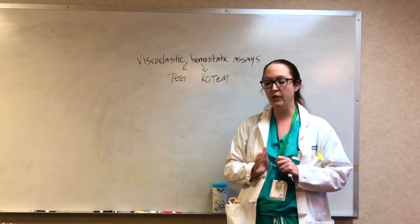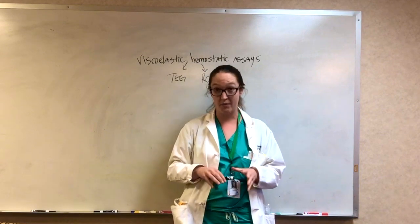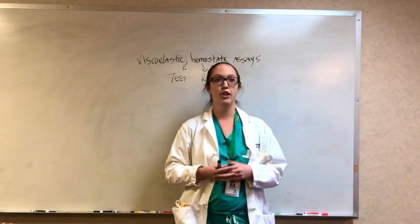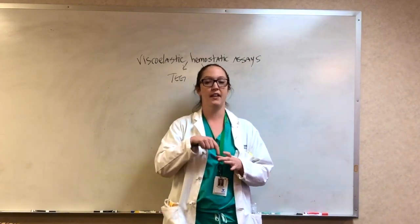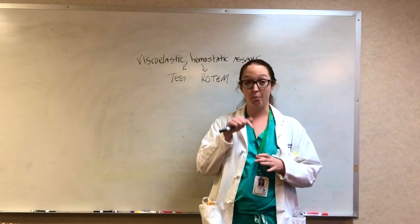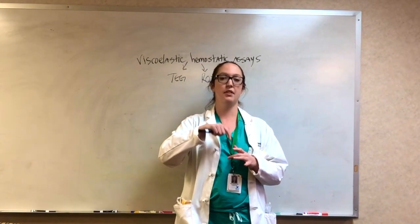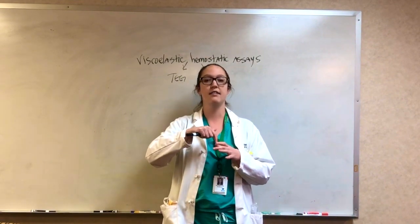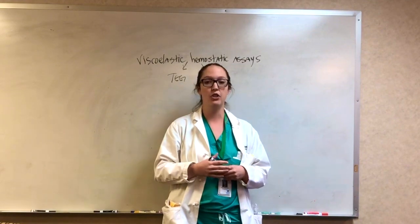So both of these work in the same way and give slightly different measurements, but they're measuring the same thing. So TEG and ROTEM only differ in that you put blood into a cup, and there's a pin that's inside that cup, and either the pin or the cup spins. And as it does, blood forms and deposits in the setting of TEG onto that pin, and the pin detects changes in resistance and amplitude and gives you a tracing.